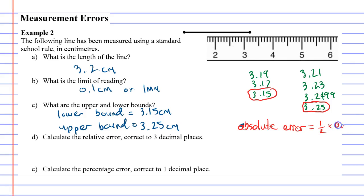0.1 was our limit of reading, which comes out to 0.05 centimeters. And you might remember earlier that the upper and lower bounds can quite simply be solved by taking the length of the line, 3.2, and subtracting the absolute error to get the lower bound, or 3.2 adding the absolute error to find the upper bound. You could have done it that way. Alright, let's just do question E now.